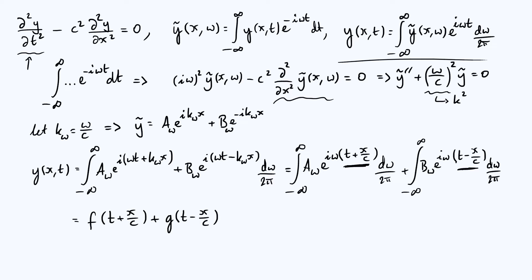Now this is already a perfectly valid form of the general solution of the wave equation, but let's try to get a little more intuition as to what this actually means. To do that, I'm going to factor a constant out of each of the arguments of my f and g functions. For f, I'm going to factor out 1 over c, giving f of (1/c) times (x plus ct) — I'm just factoring out 1/c and switching the terms around since the order of addition doesn't matter. So this is completely equivalent to saying f of (1/c) times (x plus ct).